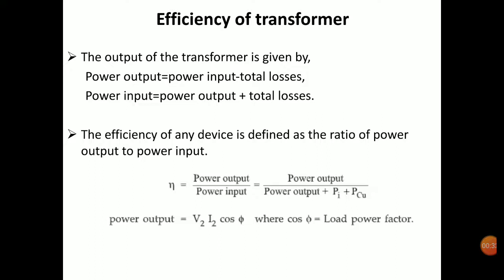We indicate efficiency using eta, so eta is equal to power output divided by power input. We convert power input to power output plus the losses. Pi is the iron loss and Pcu is the copper loss, so efficiency is given by power output divided by power output plus Pi plus Pcu.